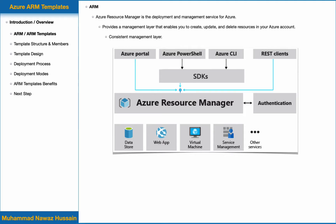It authenticates and authorizes the request, and then sends the request to the relevant Azure service, which takes the requested action. Because all requests are handled through the same API, we get consistent results and capabilities across all different tools — that's why we call this a consistent management layer. The main benefits of the Azure Resource Manager APIs are that we can deploy several resources together in a single unit.